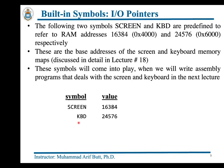The third category of built-in symbols is IO pointers. We have two such symbols: SCREEN and KBD (keyboard). SCREEN is predefined to refer to memory address 16384, which is the base address of the screen memory map. KBD is predefined to refer to memory address 24576, which is the keyboard memory map — as discussed in the IO interfacing lecture.